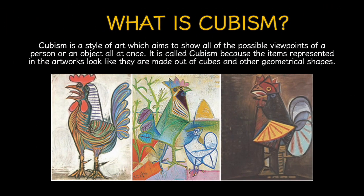What is cubism? Cubism is a style of art which aims to show all of the possible viewpoints of a person or an object all at once. It is called cubism because the items represented in the artworks look like they are made out of cubes and other geometrical shapes.